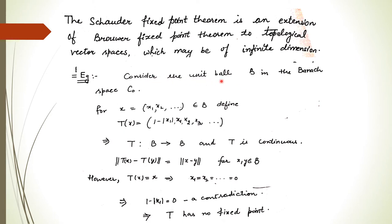Let's suppose we consider a unit ball B in a Banach space C-naught, and X is any point from B having coordinates X1, X2, and so on. Let T be a mapping going from B to B defined as T(X) = (1 − |X1|, X1, X2, X3, ...). This mapping is continuous and the norm of TX minus TY equals the norm of X minus Y.